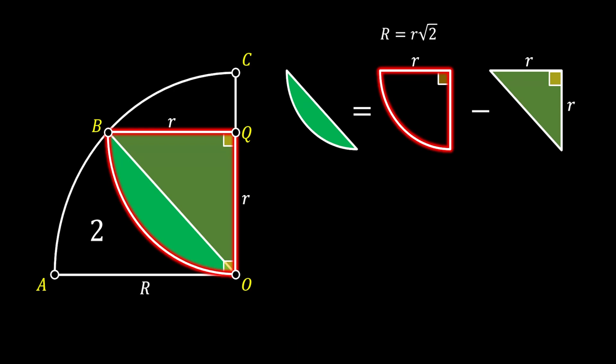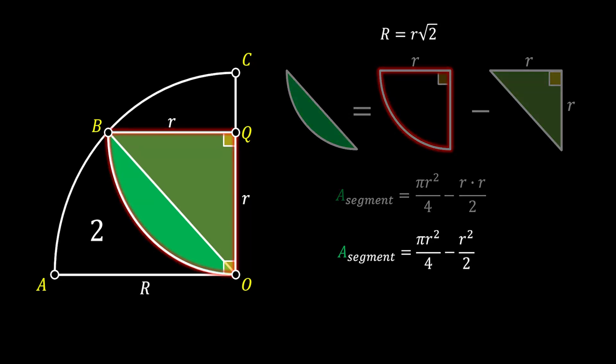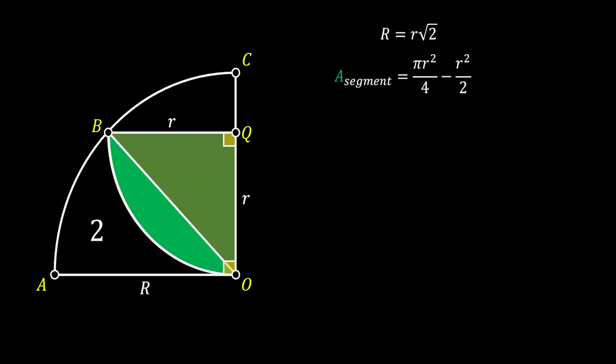So, we can basically get the area of this green segment as the difference between the areas of our quarter circle with the radius of small r and our isosceles right triangle with the legs of r. So let's write this down as an equation. So the area of the segment is equal to Pi r squared over 4 for the area of the quarter circle minus the product of the legs over 2 for our isosceles triangle. We can simplify this a little bit and get the following. And we are not going to simplify this equation any further for now.